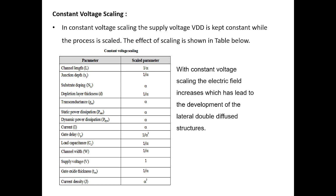Next, we will discuss constant voltage scaling. Here the supply voltage VDD is kept constant and the process is scaled. The same parameters are considered: channel length, junction depth, substrate doping, depletion layer thickness, transconductance, static power dissipation, dynamic power dissipation, current, gate delay, load capacitance, and channel width W — all scaled by parameter alpha. However, supply voltage V remains at 1 (not scaled). Gate oxide thickness Tox and current density J are also scaled. With constant voltage scaling, the electric field increases, which has led to the development of the lateral double diffused structures.